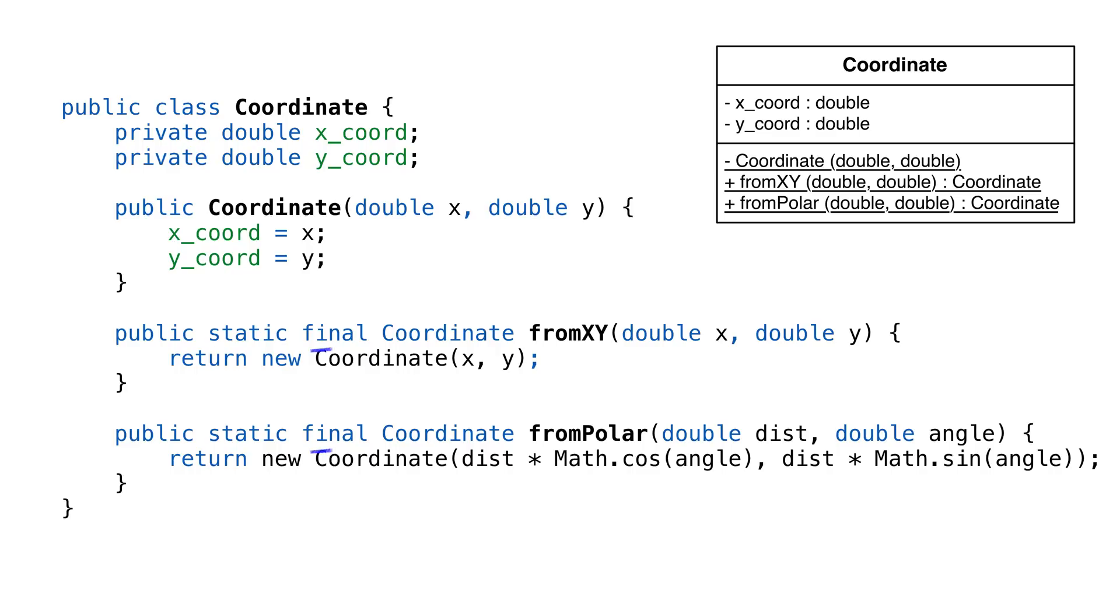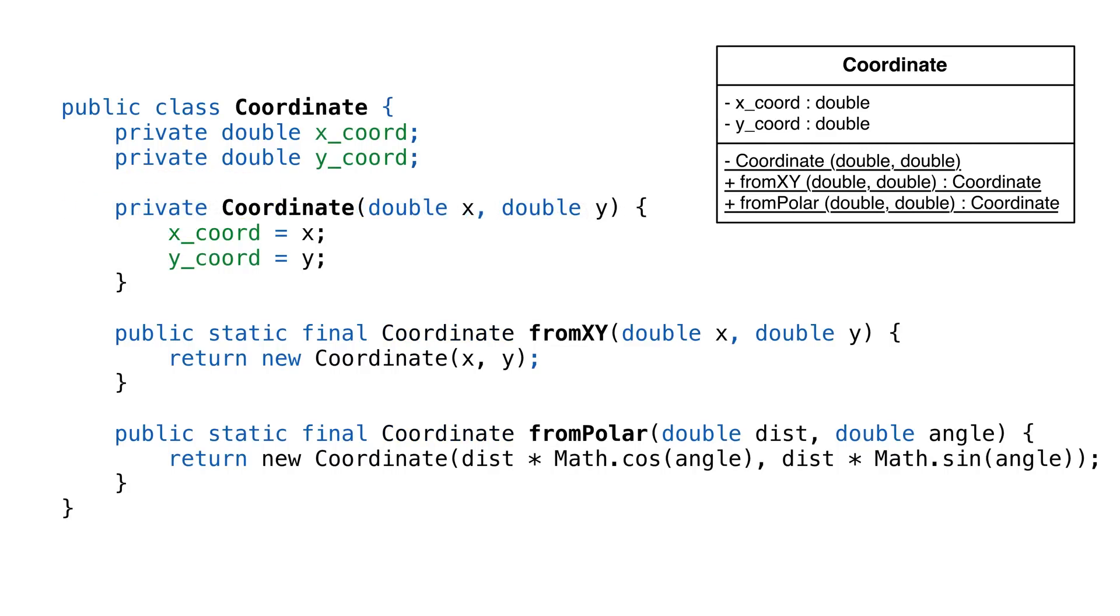The other thing you'll want to do is make these methods final. We don't want new behavior for creation here. And finally, we want to make the constructor private. This enforces how instances of our classes are created. Okay, now we have a static factory.